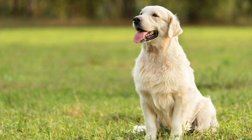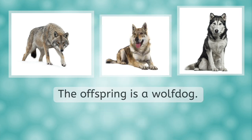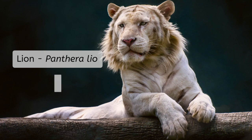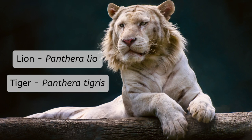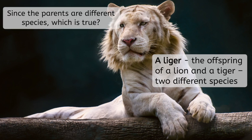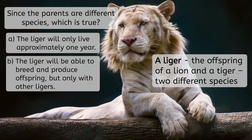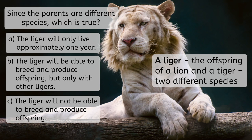Wolves are also part of the species Canis lupus, so dogs and wolves are the same species and can breed together to produce fertile offspring — a wolf-dog. How about a liger? Lions, Panthera leo, and tigers, Panthera tigris, are from the same genus Panthera but different species. When they breed together, they produce a liger. However, since the parents are different species, which is true: a) the liger will only live approximately one year; b) the liger will be able to breed and produce offspring, but only with other ligers; or c) the liger will not be able to breed and produce offspring? If you said c, you are correct. A liger is unable to breed and produce offspring because it is an infertile offspring of two different species.